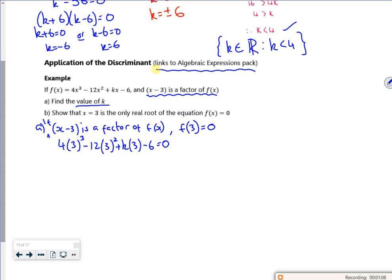Now if I do some faffing around, 4 times 3 cubed minus 12 times 3 squared minus the 6 gives me minus 6. I've got 3k, so that's equal to 0, so I get out k is equal to 2.